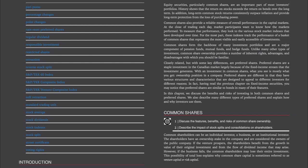Common shares form the backbone of many investment portfolios and are a major component of pension funds, mutual funds, and hedge funds. Common share ownership provides a number of inherent rights, advantages, and disadvantages. Closely related but with some key differences are preferred shares. Preferred shares are a staple investment in the Canadian market largely because of the fixed income stream they generate. They have various structures and characteristics designed to appeal to different investors. In this chapter, we discuss the benefits and risks of investing in both common shares and preferred shares, including the many different types of preferred shares.